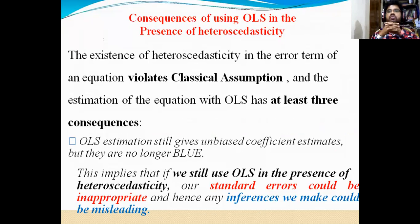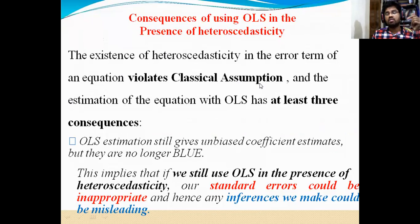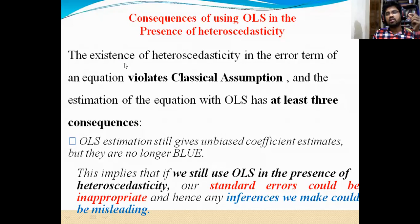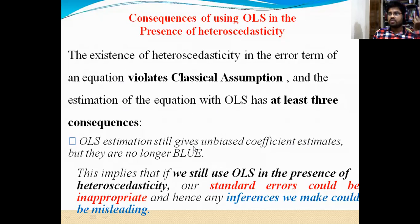What are the consequences of using OLS in the presence of heteroscedasticity? When there is a heteroscedastic problem and you are using OLS method, the existence of heteroscedasticity in the error term of an equation violates the classical assumptions — that is called CLRM. As I told you in the causes of heteroscedasticity, when we violate the assumptions of CLRM, we will get a heteroscedasticity problem. The estimation of the equation with OLS has at least three consequences. The OLS estimation still gives unbiased coefficient estimates, but they are no longer BLUE. We will get the values of beta, but when we are going to test the hypothesis, they are going to provide wrong values of standard errors.